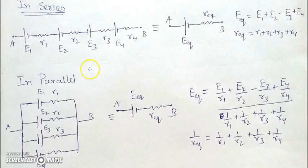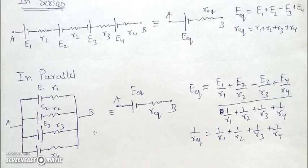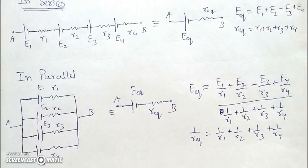In a parallel combination, these are the internal resistances and these are the cells. When connected in parallel — again e3 is opposite to the rest — the equivalent EMF is: (e1/r1 + e2/r2 − e3/r3 + ...) divided by the sum of (1/r_i). The sign of each resistance remains positive in the equivalent resistance formula.